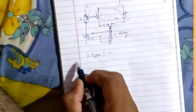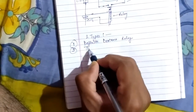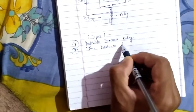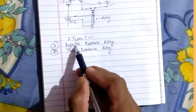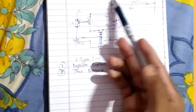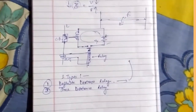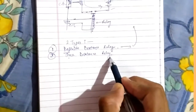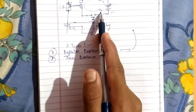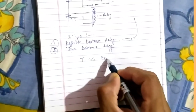Distance relays are of two types. Number one is the definite distance relay, and the other one is the time distance relay. The definite distance relay simply trips the circuit when the impedance value decreases or changes, activating the tripping mechanism under abnormal conditions. In the time distance relay, the tripping is directly proportional to time, and time is directly proportional to distance.